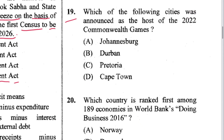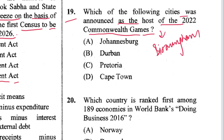Question 19: Which city was announced as host of the 2022 Commonwealth Games? The 2022 Commonwealth Games was held in Birmingham. The 2026 host city is Victoria, Australia.